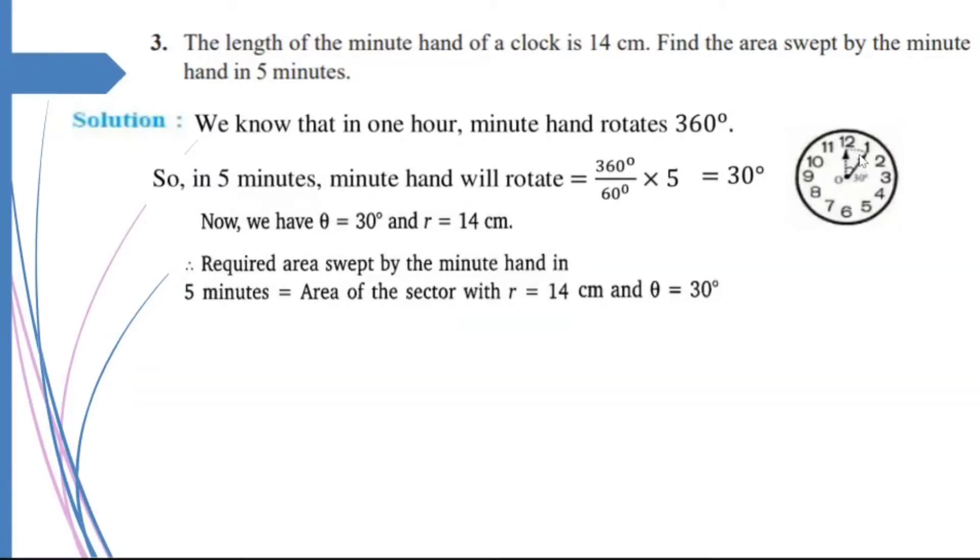Area swept by the minute hand in 5 minutes will be equal to area of the sector with R equal to 14 and theta equal to 30 degrees. I know that for angle theta degrees, the area of the sector is equal to theta upon 360 into pi R square. So, if I take theta to be 30 and R to be 14,